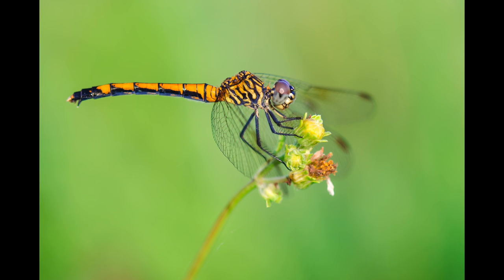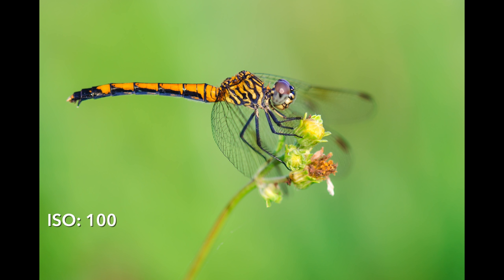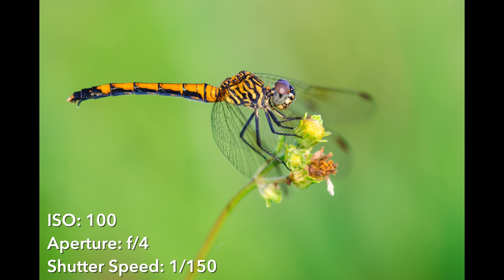Now let's look at a similar but slightly more complicated example. I took this dragonfly photo at 1/400th of a second, f4, ISO 280. Working backwards again from ISO — once again, I first set it to the lowest value, ISO 100. Then I moved to aperture: I still want a large amount of blur in the background, so I'm using a large aperture, f4 once again. Finally I moved to shutter speed. Here I would have gotten the proper exposure at 1/150th of a second, but that's not going to work. This dragonfly was on a flower moving in the wind, and close-up photography is already magnifying any camera shake, so I needed a faster shutter speed — specifically 1/400th of a second.